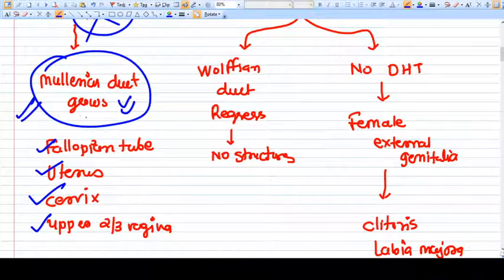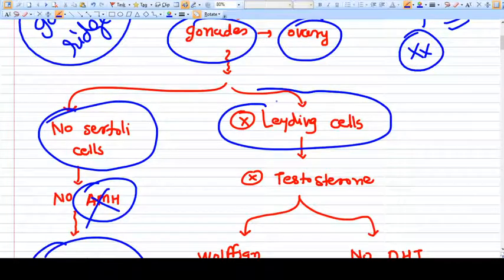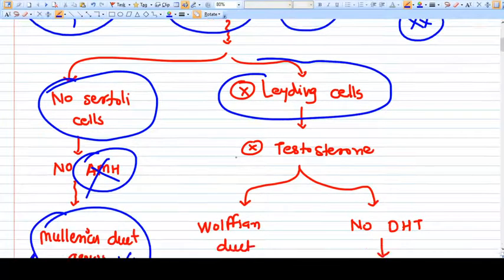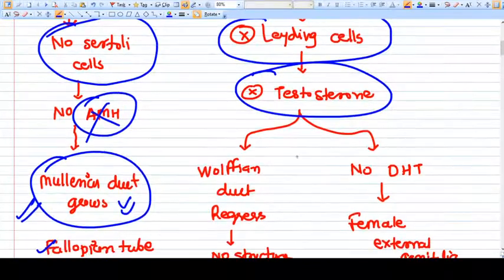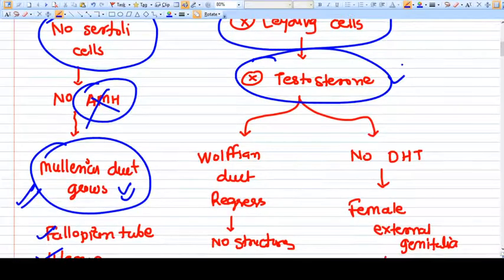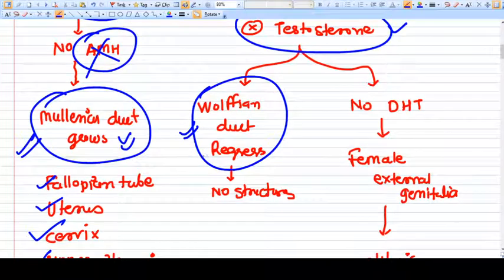Also we don't have the leydig cells because the gonad is ovary, so we don't have the testosterone. And that's why, because we don't have testosterone, the wolfian duct, the mesonephric duct, will regress and there will be no structure or there may be some one or two rudimentary structures.